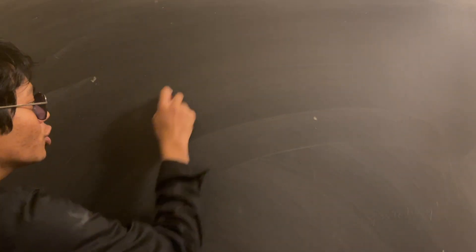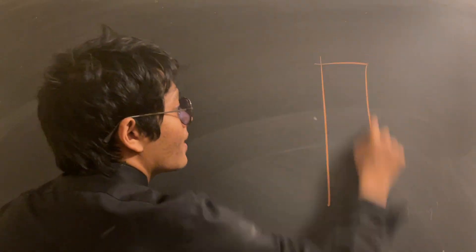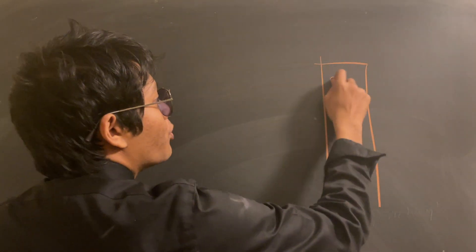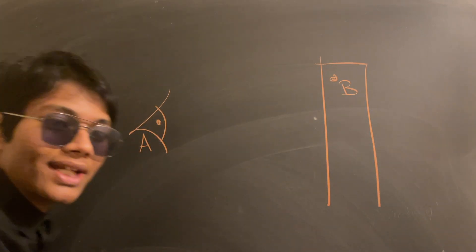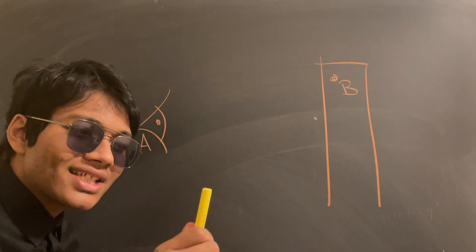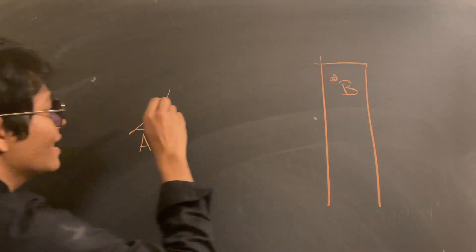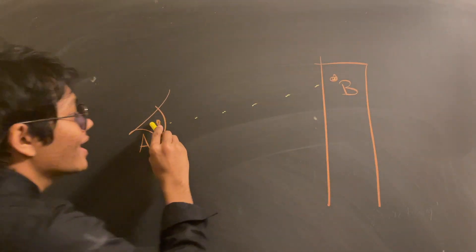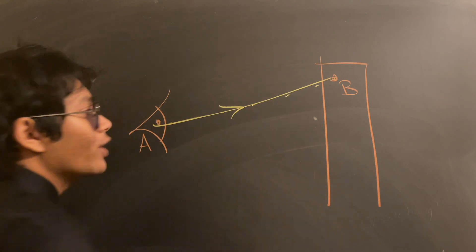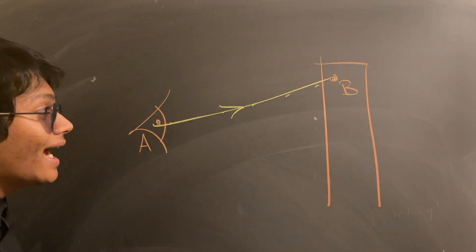The first property is that light travels in a straight line. If you're looking at some object — let's say a building — and you're looking at some point on the building, let's call that point B, and your eye is point A, the fastest way to get from point A to point B is, as we all know, a straight line. That's why light travels in a straight line from point A to point B.